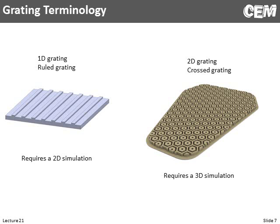On to simulating 1D gratings with a fully 3D rigorous coupled wave analysis. First, we need some terminology. A one-dimensional grating means there's only periodicity along one axis — a change in the dielectric function along one axis. To model a 1D grating requires a 2D simulation. Then we have a crossed grating, or 2D grating, which requires a 3D simulation. So don't get tripped up: a 1D grating requires a 2D simulation, and a 2D grating requires a 3D simulation.